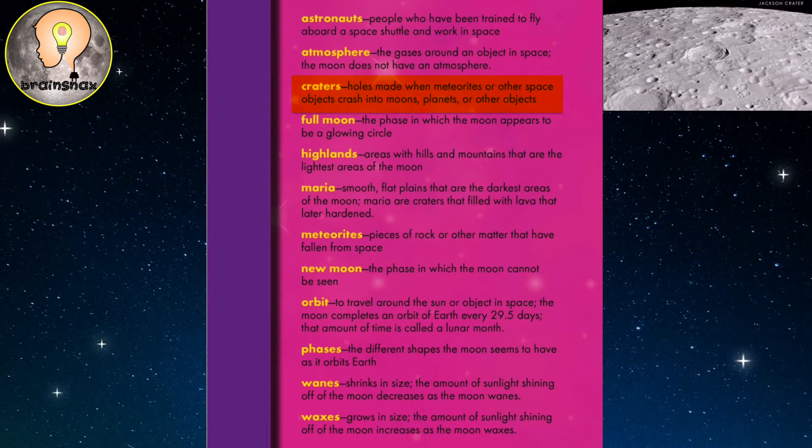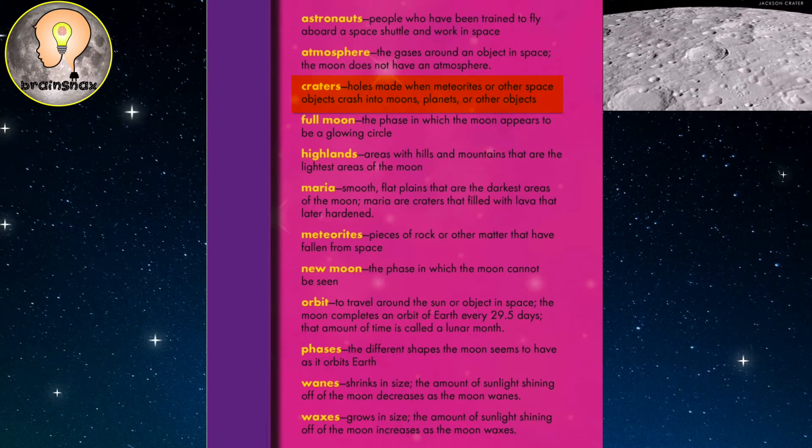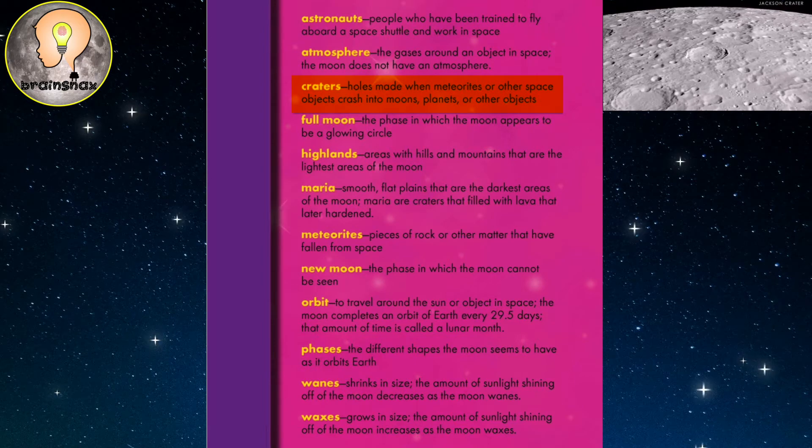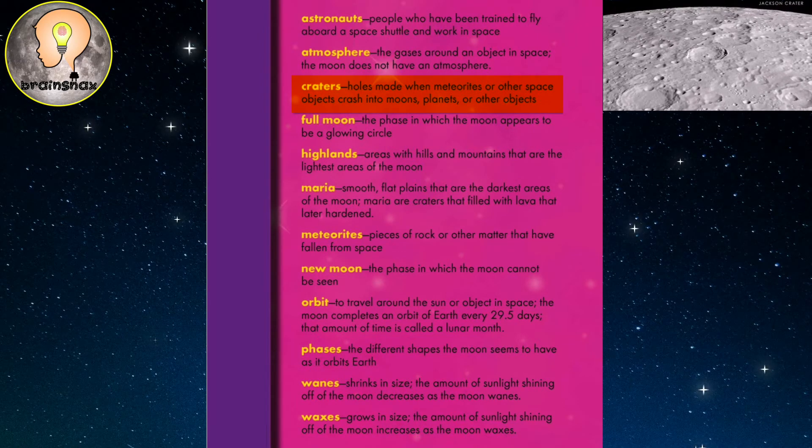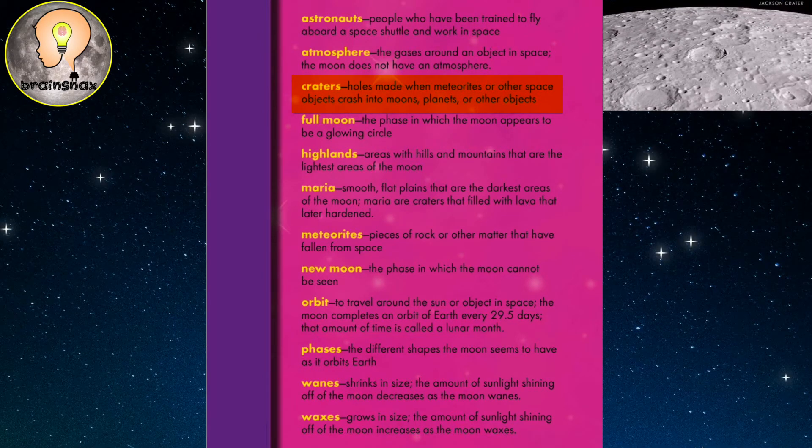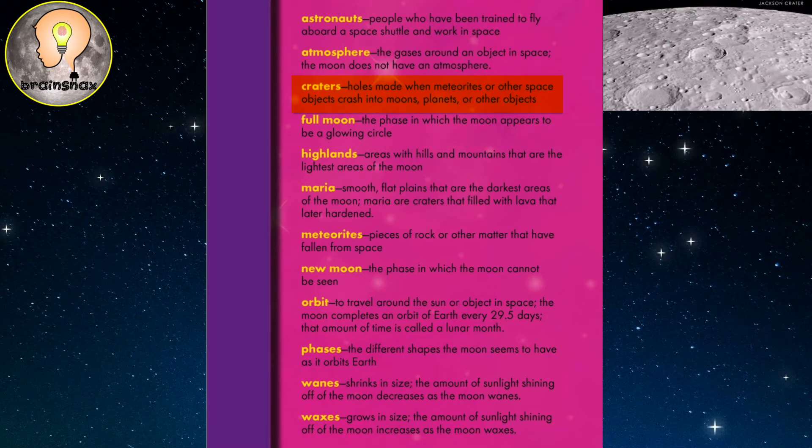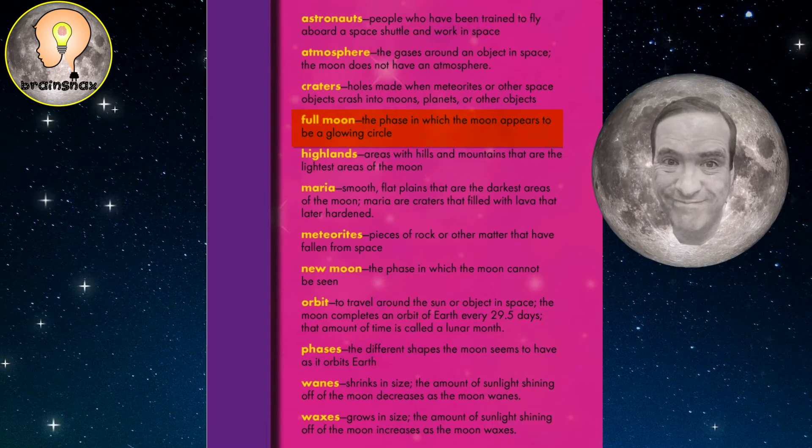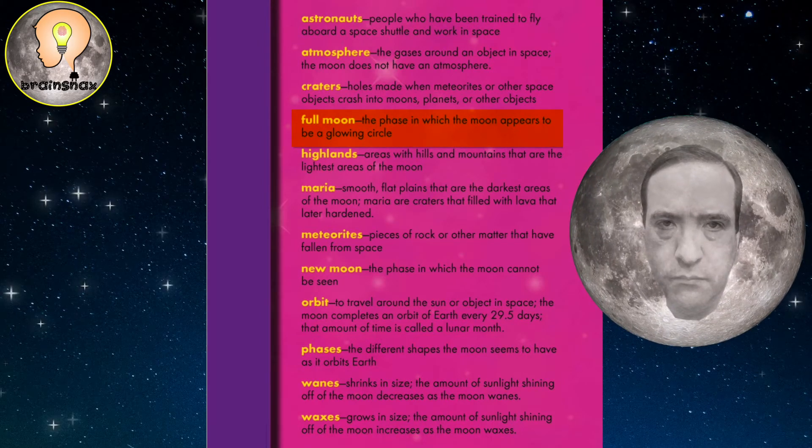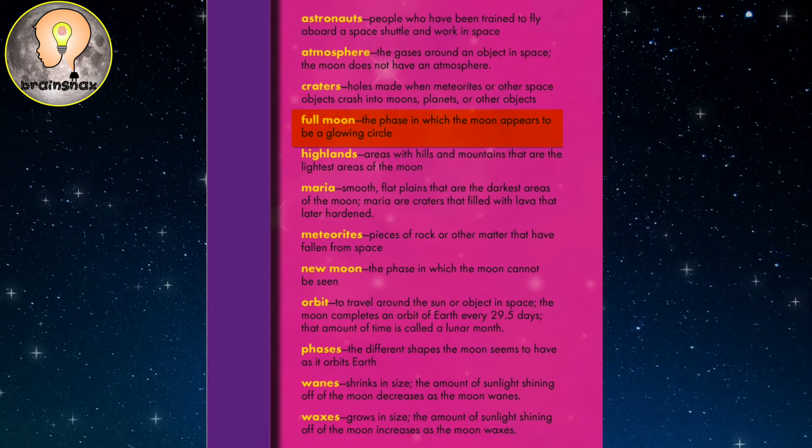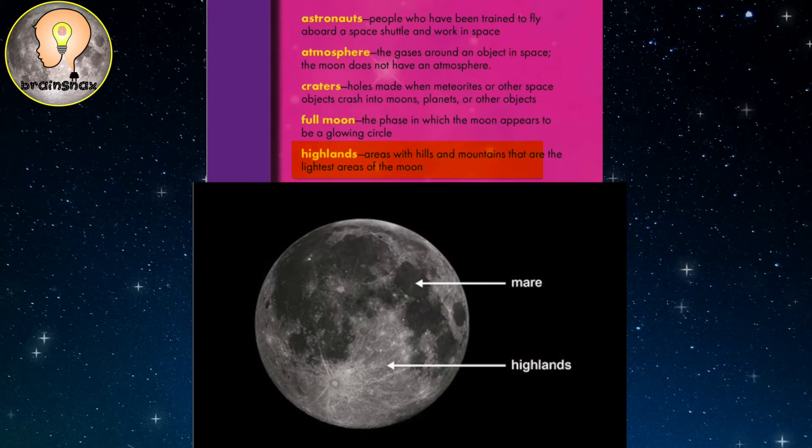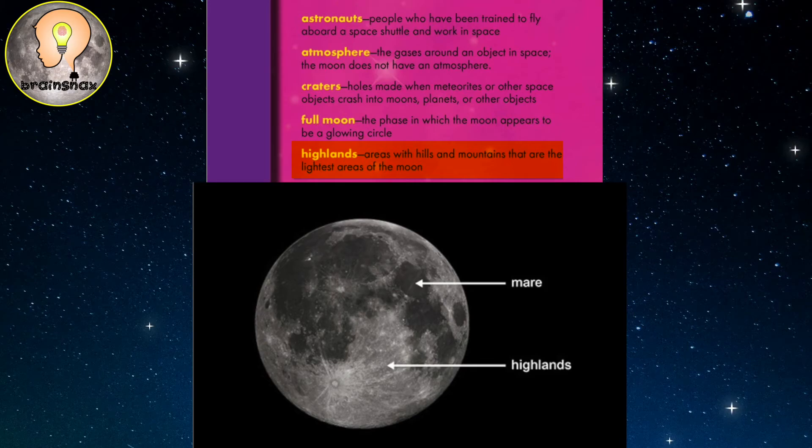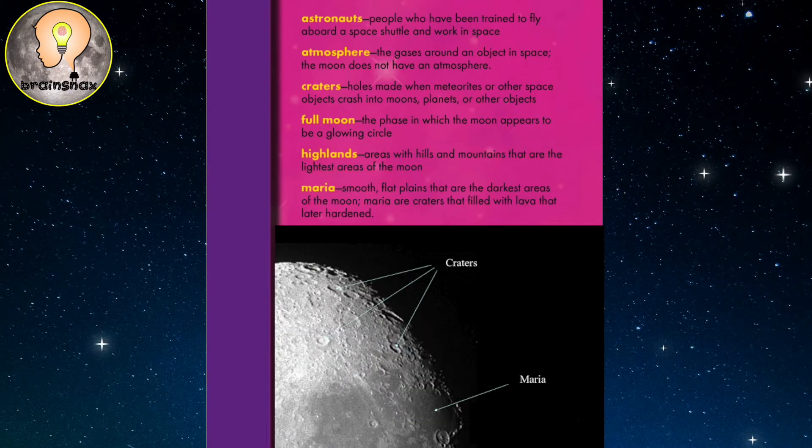Craters: holes made when meteorites or other space objects crash into moons, planets or other objects. Full moon: the phase in which the moon appears to be a glowing circle. Highlands: areas with hills and mountains that are the lightest areas of the moon.